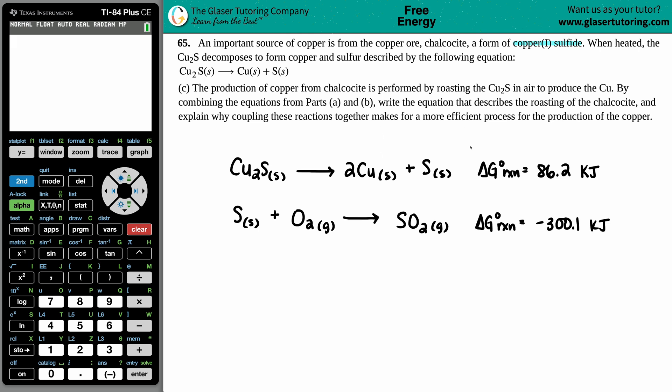Now we have letter C. The production of copper from chalcocite is performed by roasting the Cu₂S in air to produce the Cu. By combining the equations from parts A and B, write the equation that describes the roasting of the chalcocite and explain why coupling these reactions together makes for a more efficient process for the production of the copper.